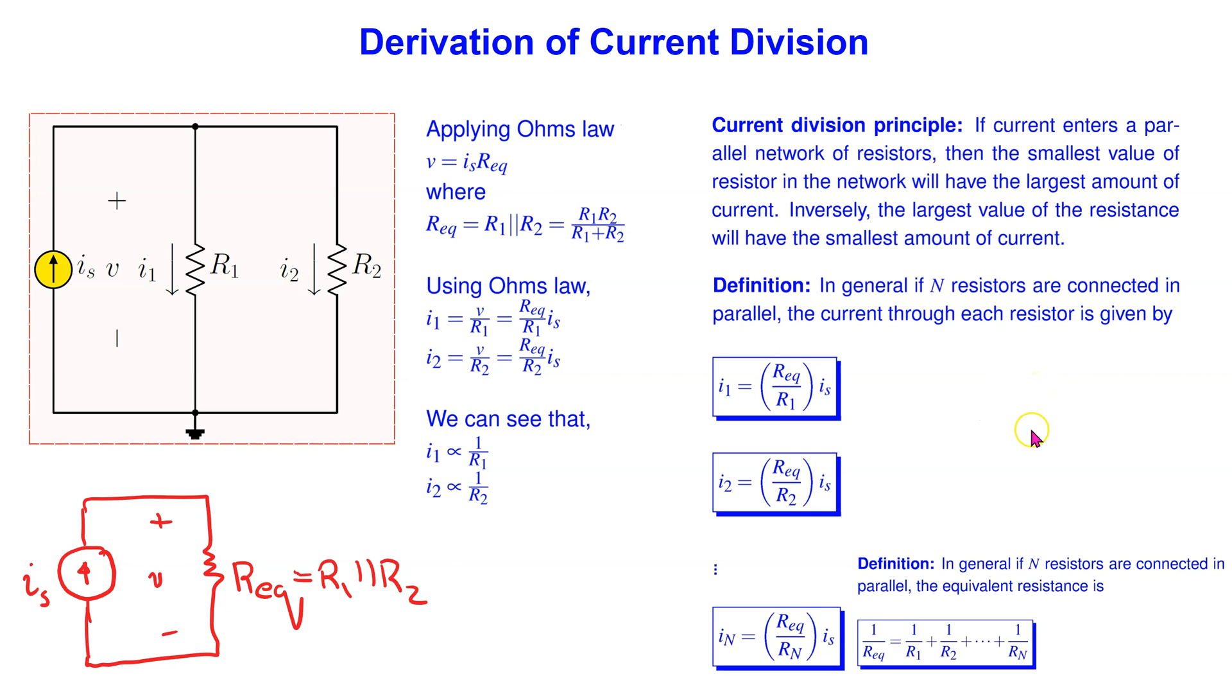The current division principle can be easily extended to any number of resistors connected in parallel. Here IS denotes the source current.